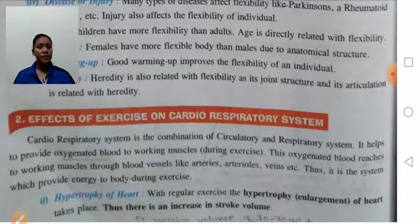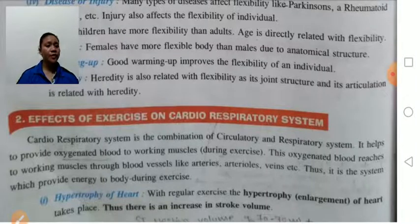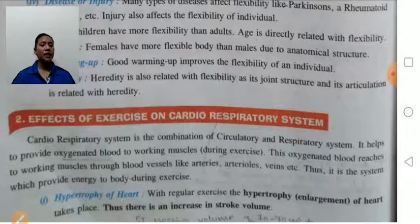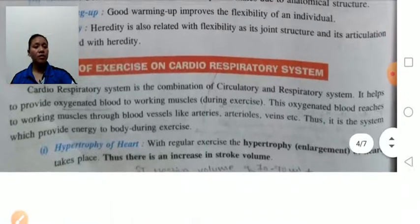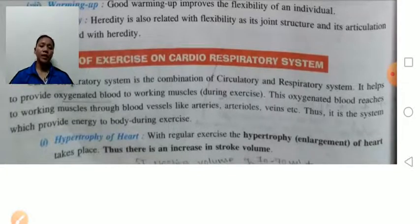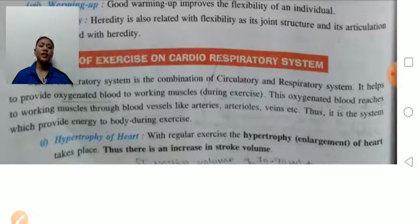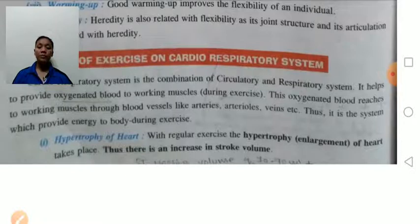This oxygenated rich blood reaches the working muscles through the blood vessels and helps to provide energy during exercise. The first effect is hypertrophy of the heart: if we do exercise, the size of the heart increases. Therefore there will be an increase in stroke volume — the amount of blood pumped out by the heart per beat. If the size of the heart improves, the stroke volume increases and more blood is pumped out.